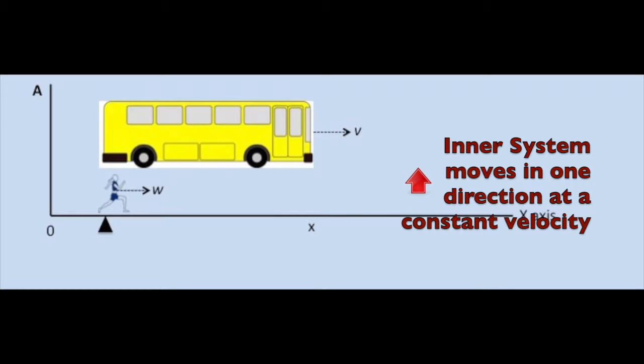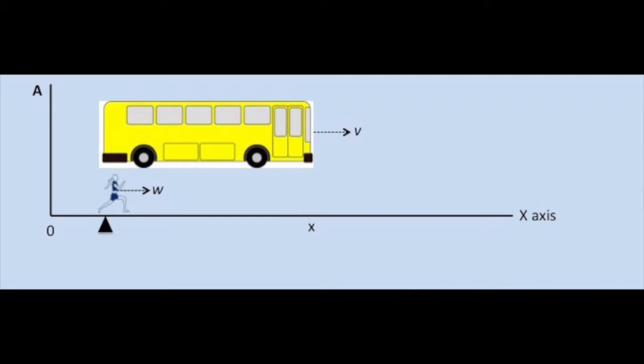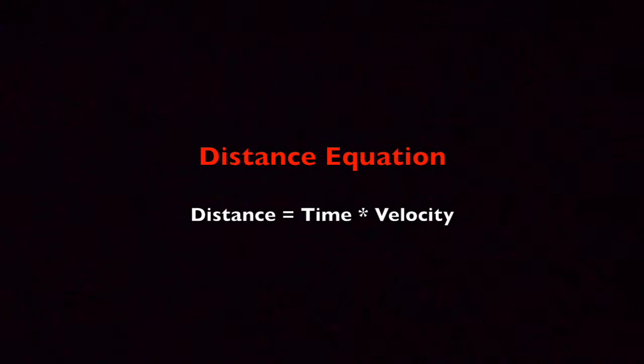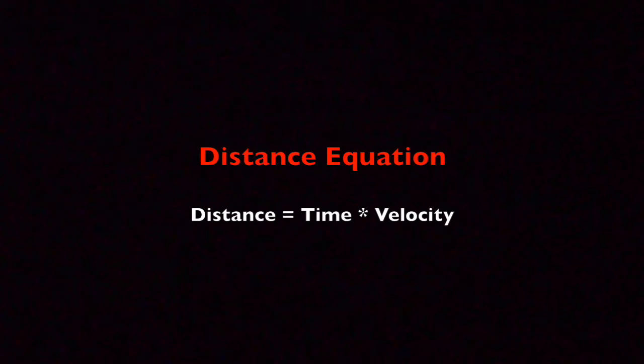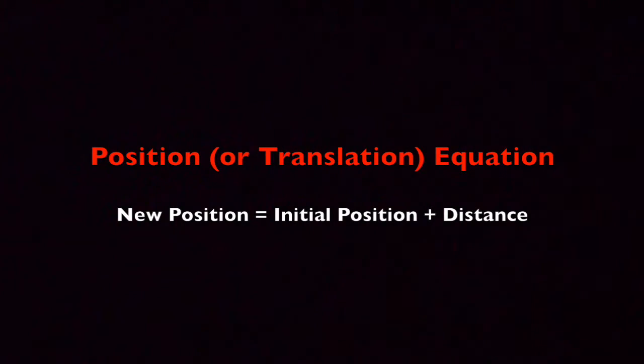As explained last time, we can find out how far the bus moves by using the distance equation. Distance equals time times velocity. And when we add a distance to an initial position, let's call it x, we get a new position, x prime.